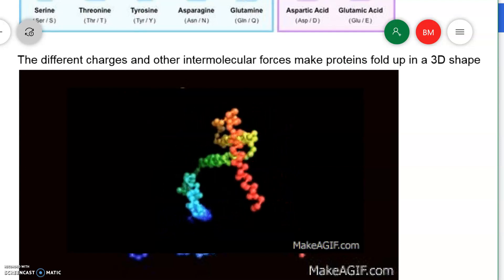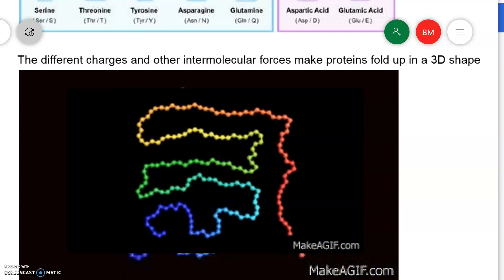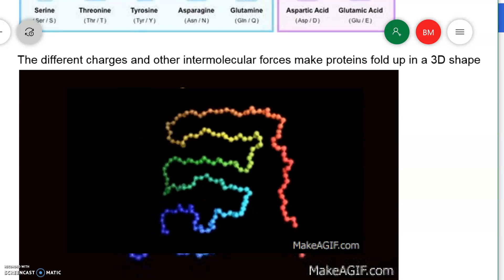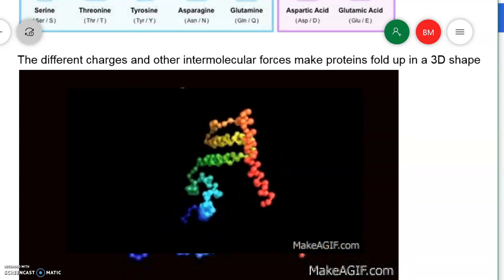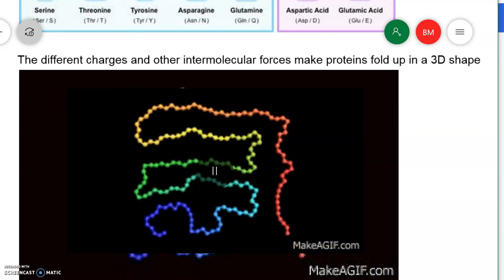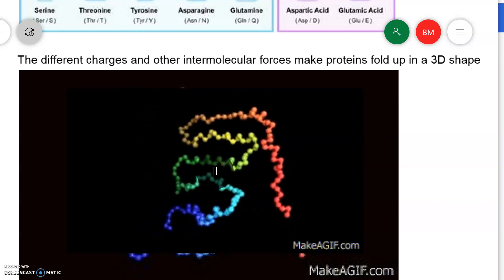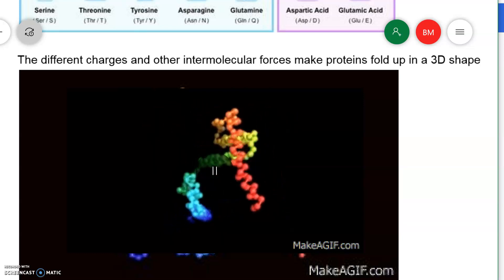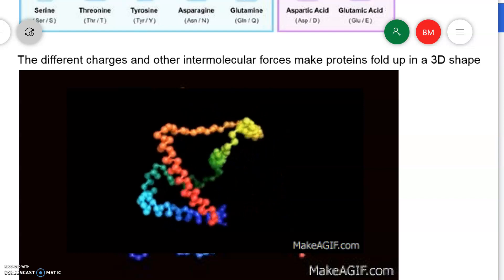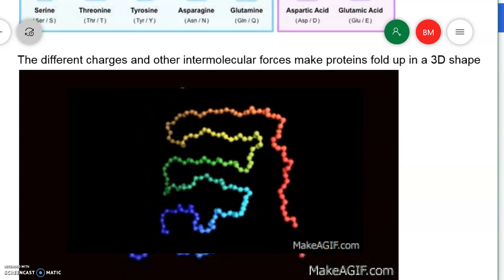The interactions between all those side chains end up making proteins fold into different shapes. Pay attention to here how these proteins are folding into spirals and then cozying up to each other. These beads are amino acids. The side chains make the amino acid chains spiral up with each other.